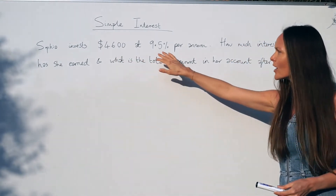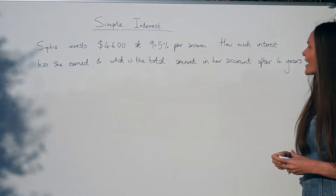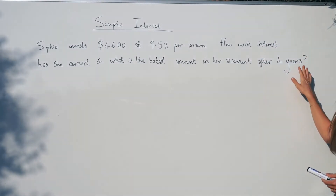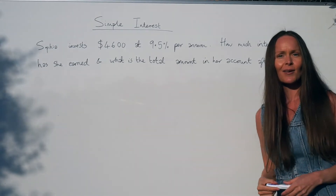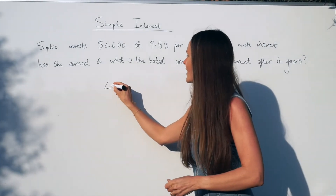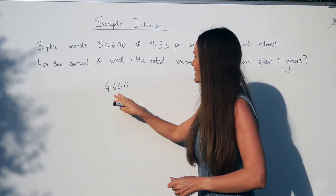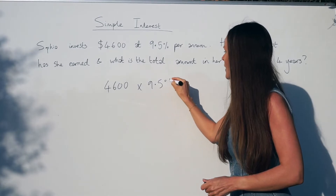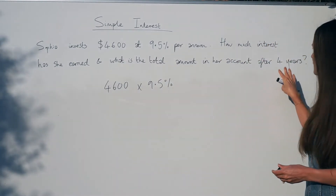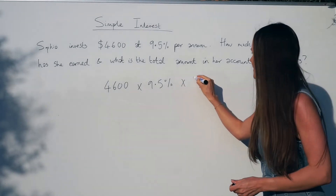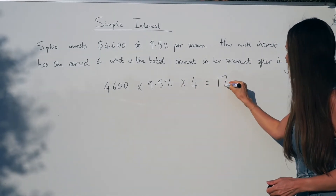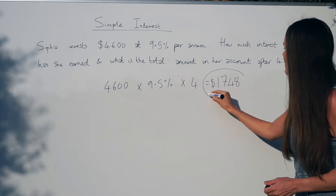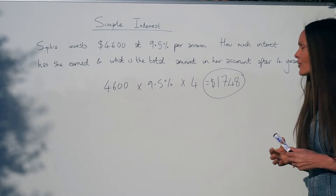You should get ten dollars — that's the simple interest gained. In the next question it says: Sophia invests four thousand six hundred dollars at nine point five percent per annum. How much interest has she earned after four years? To work out the simple interest, multiply the amount she's investing — four thousand six hundred — by the rate of interest, nine point five percent, and then by four for the four years.